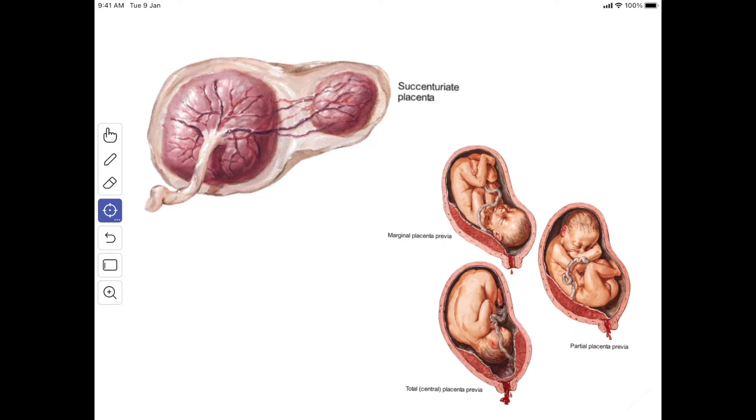Next, you have the accessory placenta. Sometime an accessory lobe of placenta that is succenturiata placenta is connected to the main mass by the fetal membrane.